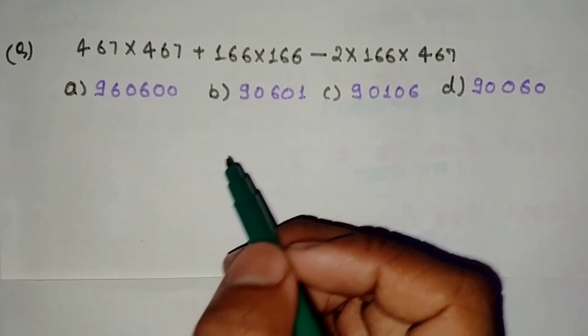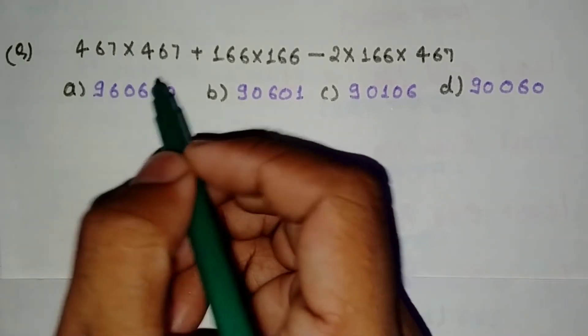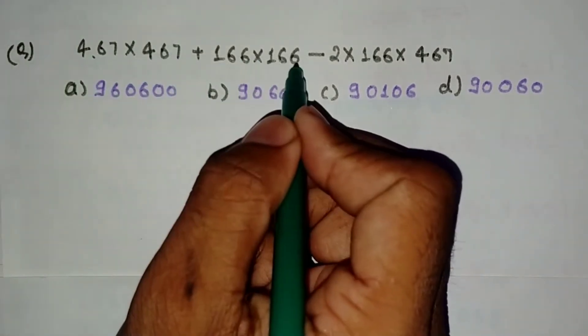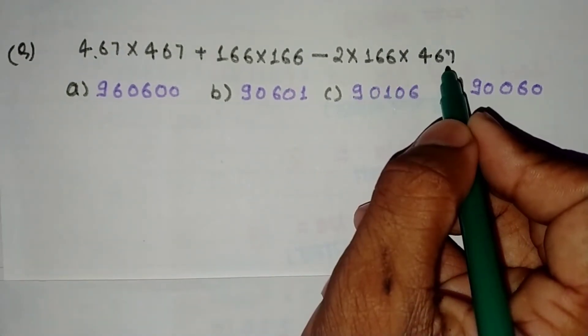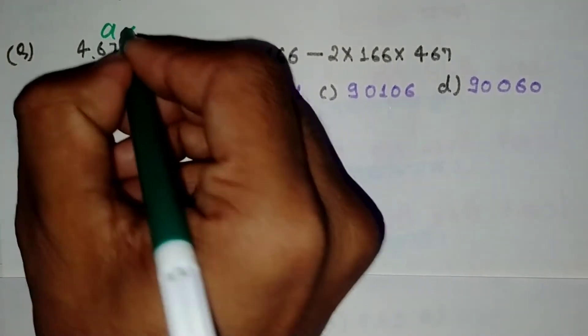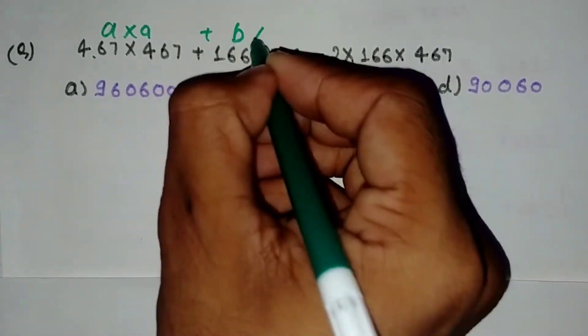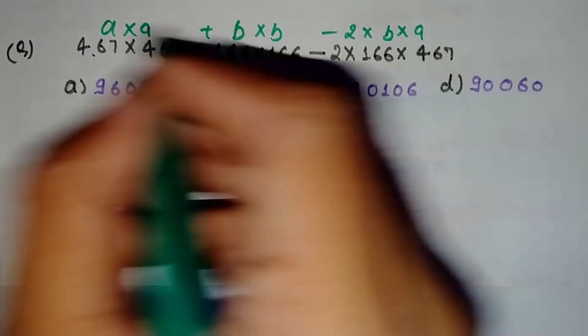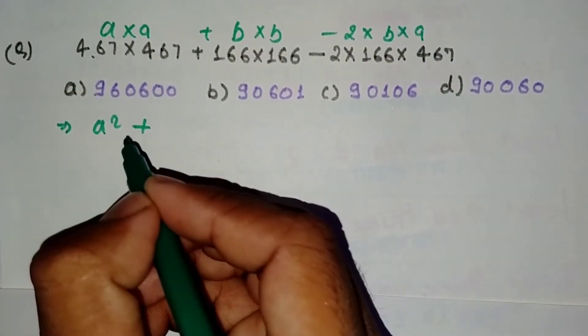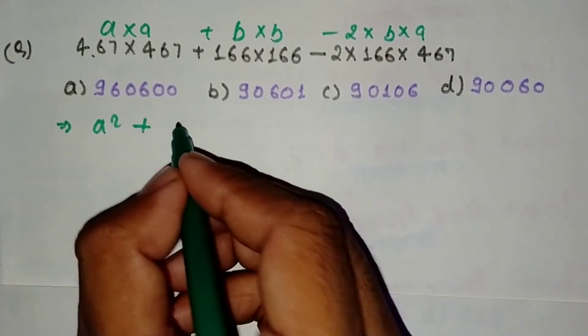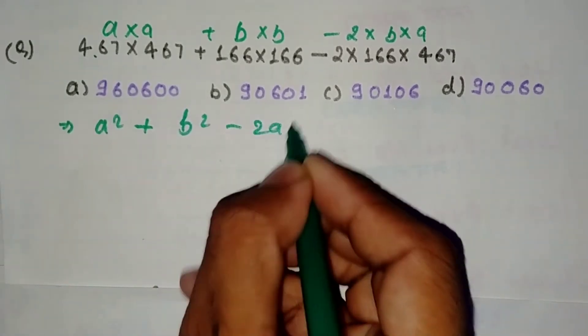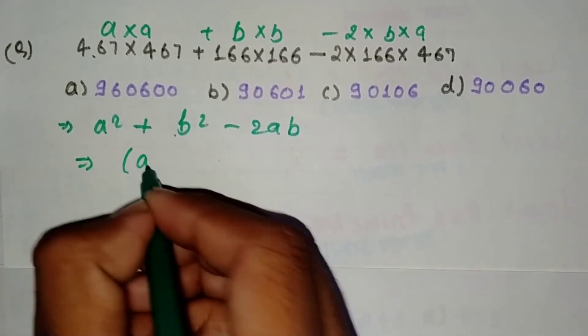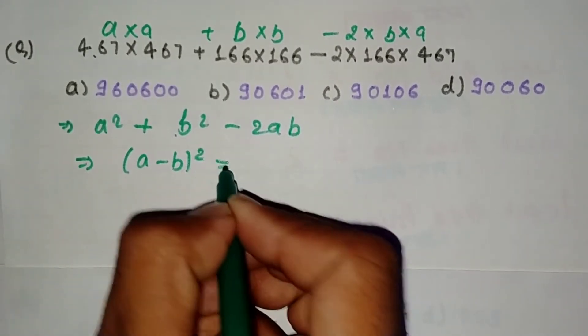Hi, this video is about solving a problem. We have a² + b² - 2ab. This equals a² + b² - 2ab, which is a minus b whole square. The formula is (a-b)² = a² + b² - 2ab.